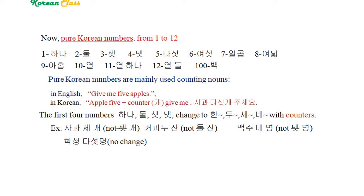Pure Korean numbers are mainly used for counting nouns with counters designated by noun classifiers. Using counters to tell numbers is quite different from English. For instance, when counting apples in English you say 'give me five apples', but in Korean it's: apples, five, counter, give me — 사과 다섯 개 주세요. The first four pure Korean numbers 하나, 둘, 셋, 넷 change to 한, 두, 세, 네 when used with counters.